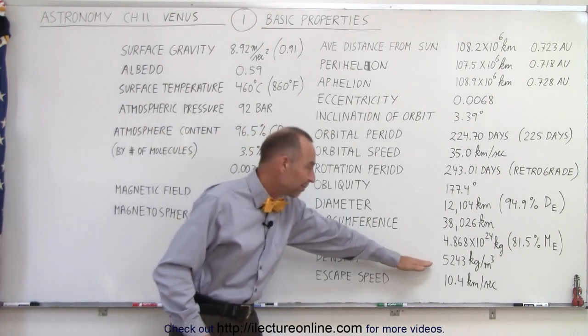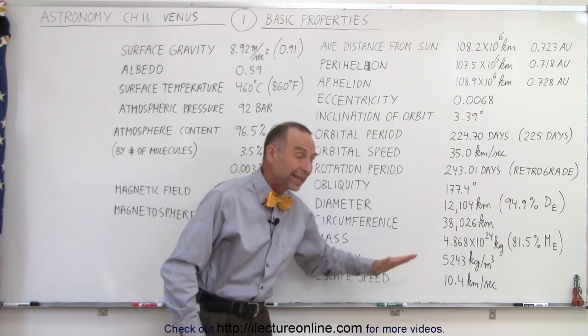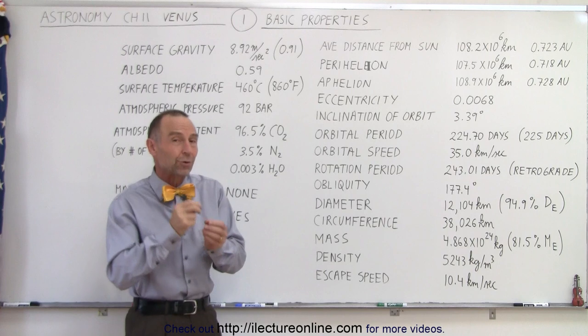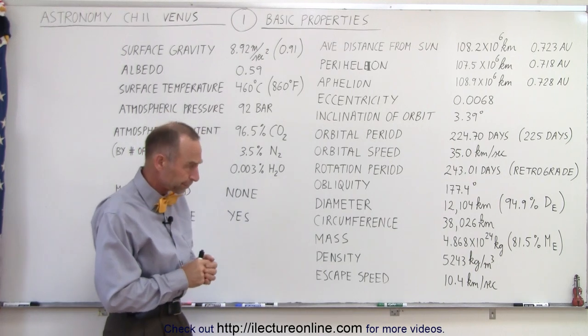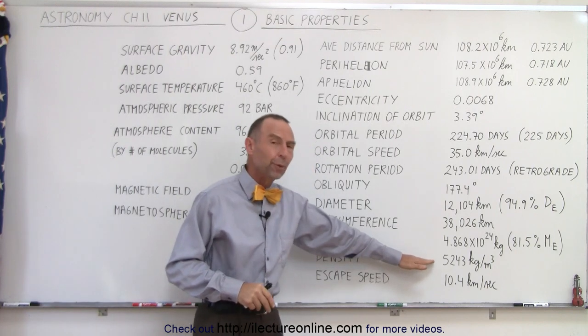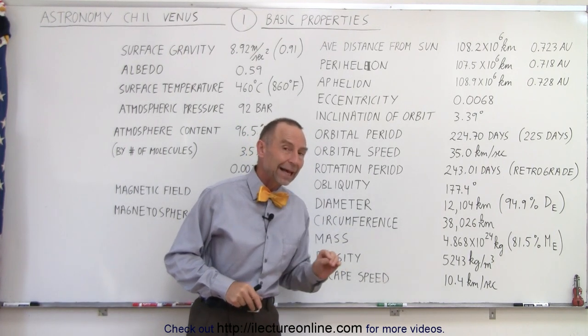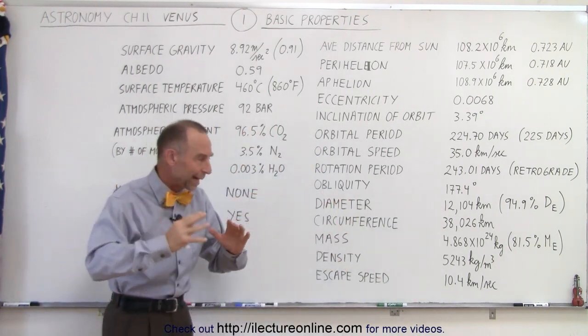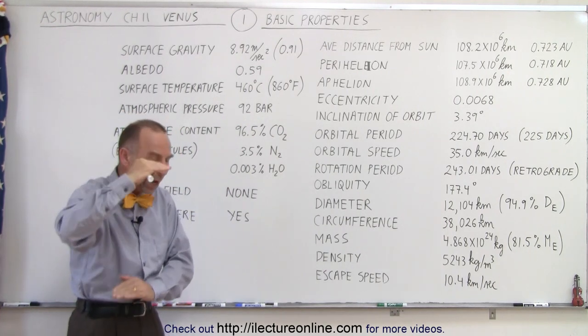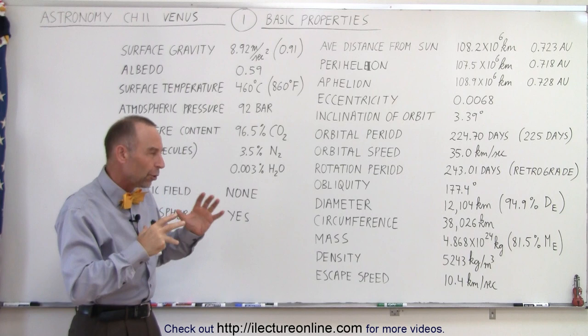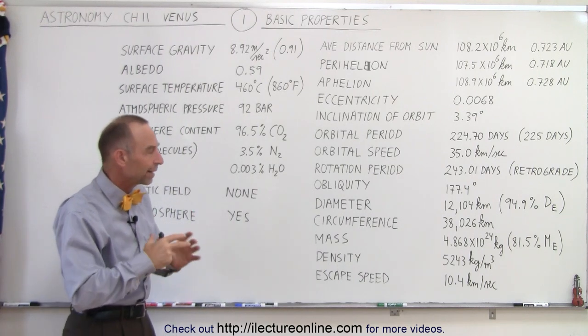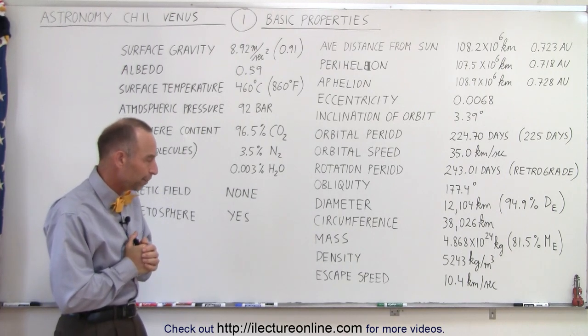The density is 5,243 kilograms per cubic meter, which makes it about 5.243 grams per cubic centimeter. The Earth is close to 5.5, so it is a little bit less. But since it's a smaller planet, the density at the center is not being as compacted by the weight of the planet above it, so it probably has roughly the same proportions of metal to rock inside the planet.